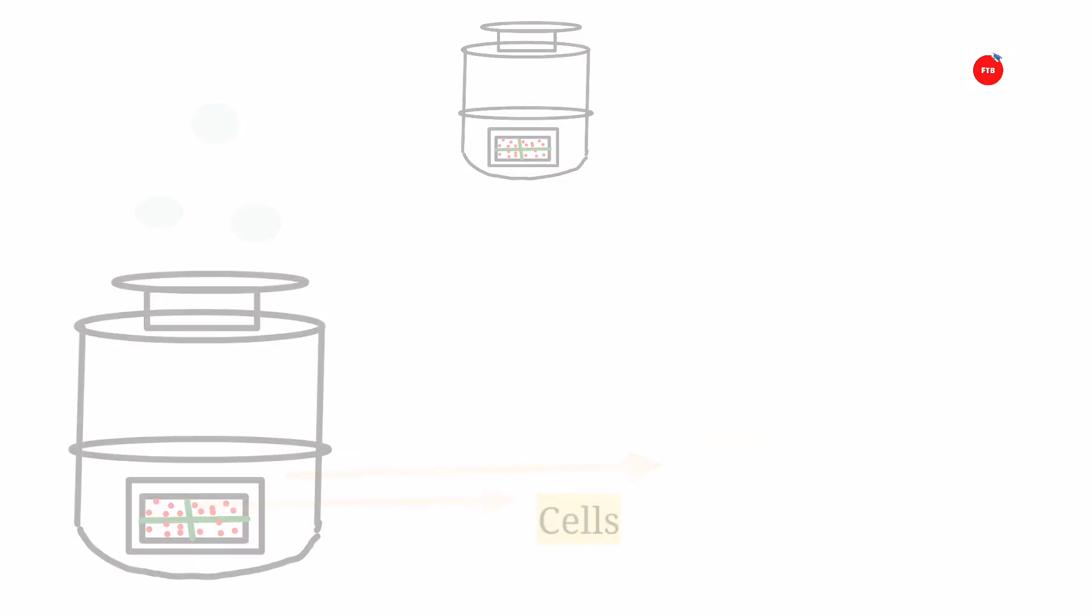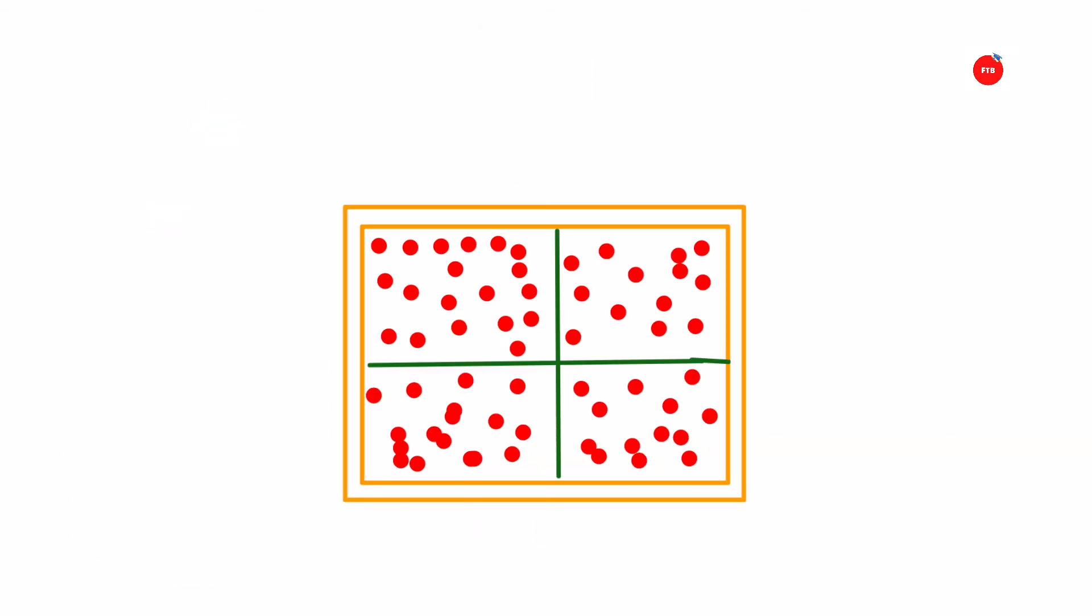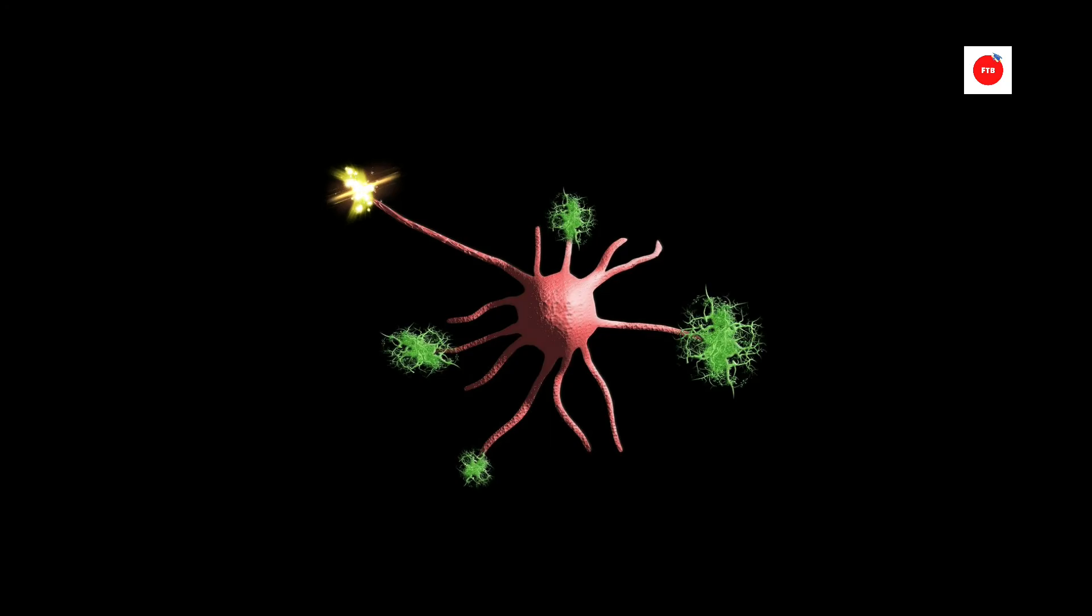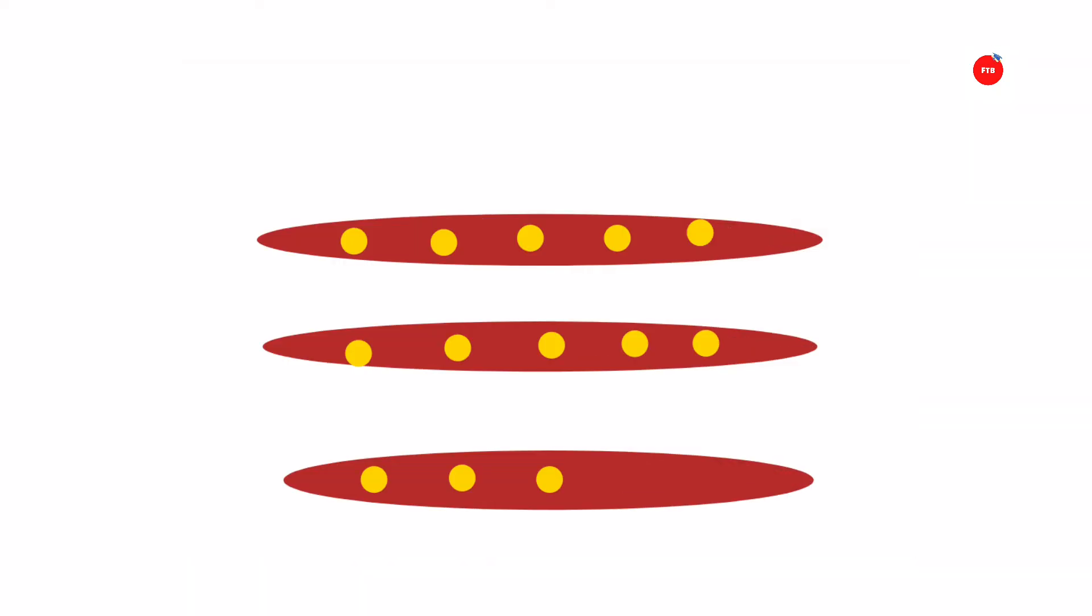Here various signals come into action such as mechanical, electrical, and chemical. Within a nerve, an action potential is initiated. This is transferred to the muscle fiber and as a result, contraction takes place.